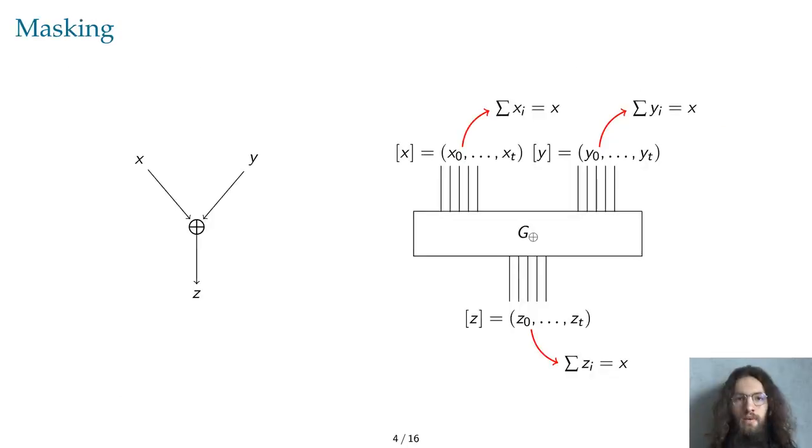Masking aims at making the secrets uncorrelated with the leaked information. It consists in replacing every variable with sharings, which are tuples of shares, chosen randomly except for the last one, such that they're verifying the completeness relationship, meaning that the value a sharing represents is equal to the sum of its shares for a given additive group law.